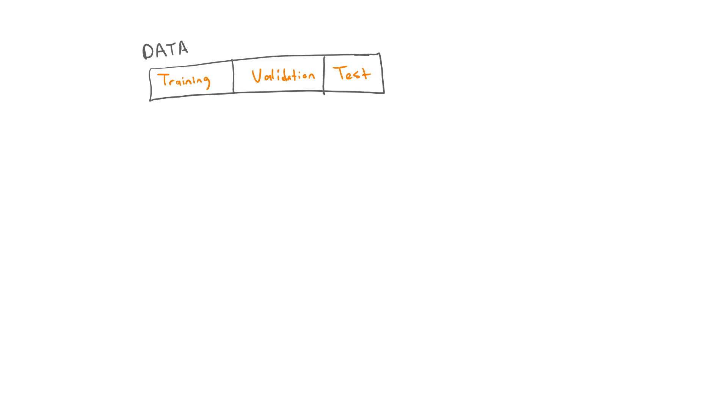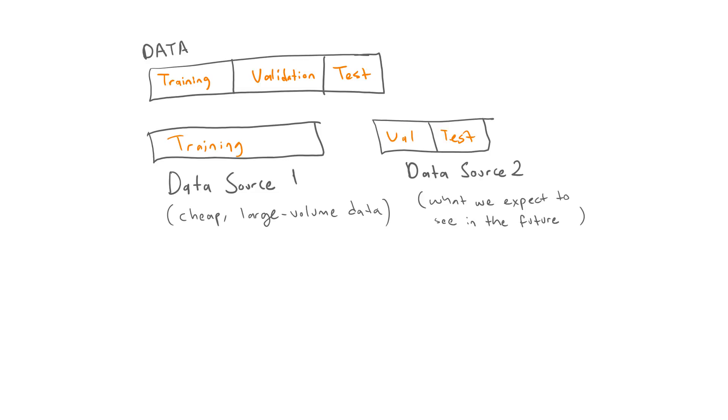Although the validation and test sets usually consist of samples that come from the same distribution as the training set, this is not a strict requirement. It's not uncommon to train a model on samples from one source and test it on another source which usually consists of more challenging samples.